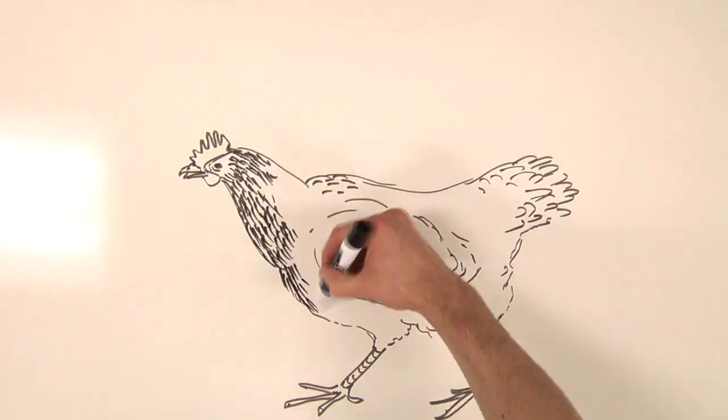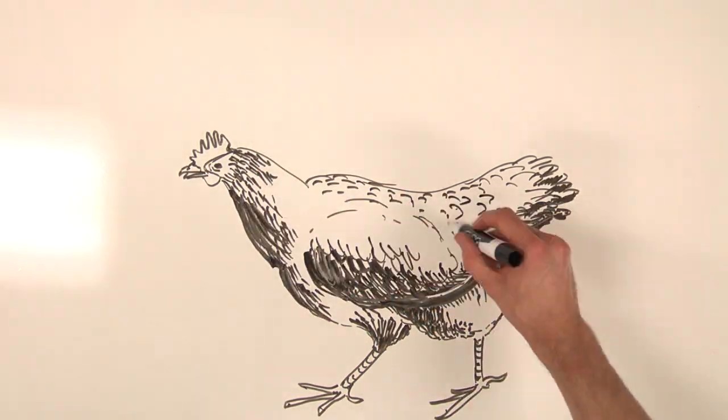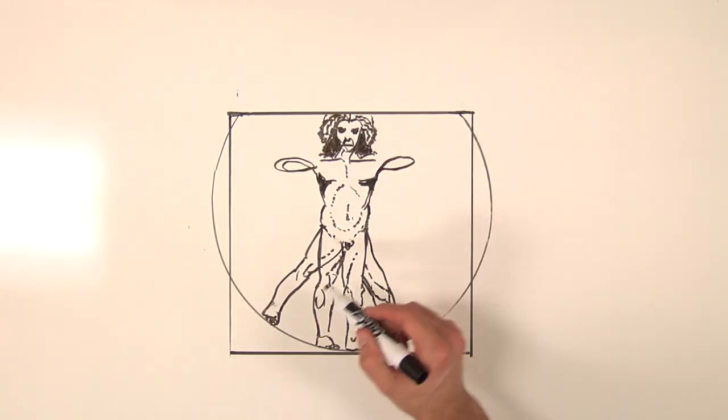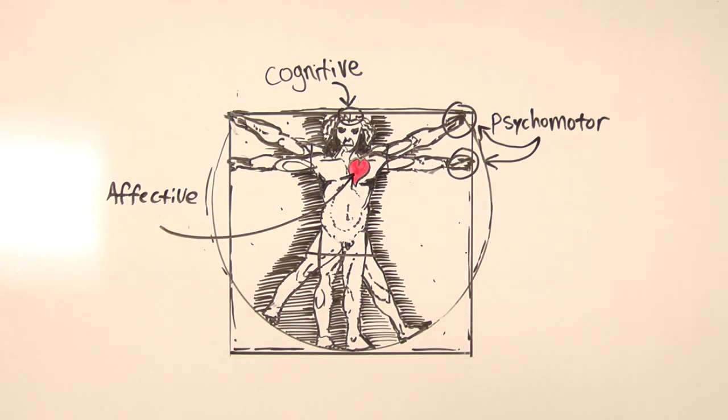Much as the butcher conveniently divides a cute fluffy chicken into delicious pieces, academics divide the mechanisms of human learning into three domains: cognitive, psychomotor, and affective.